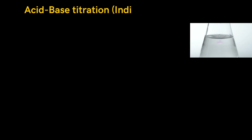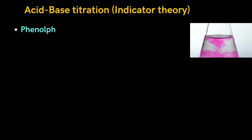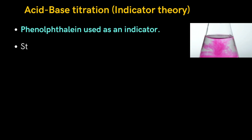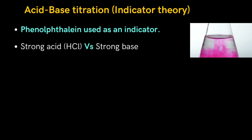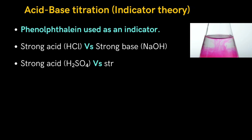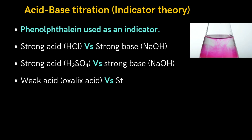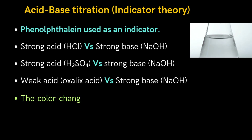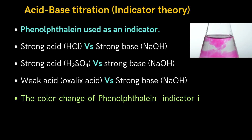Let us understand the color change of indicator when acid-base titration is performed. Generally, phenolphthalein is used as an indicator when titrating strong acid (HCl) versus strong base (NaOH), strong acid (H2SO4) versus strong base (NaOH), and weak acid (oxalic acid) versus strong base (NaOH).